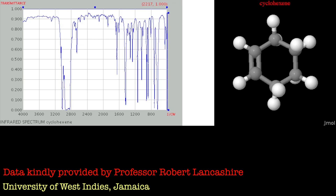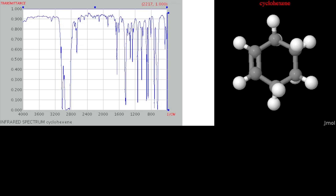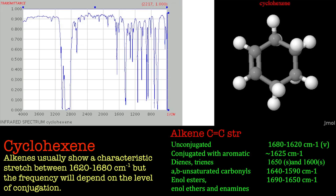The next example illustrates why we see several peaks sometimes. This is a very simple molecule, cyclohexene, from Robert Lancashire's website. Looking at the double bond region — around 1597, 1650, and 1681 — these are all in the carbon-carbon double bond region. We've also got some other peaks here, and this very broad peak because it's basically an aliphatic molecule, so there are lots of CH peaks.